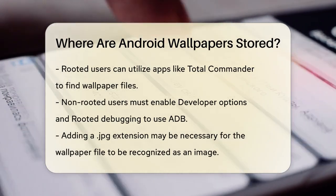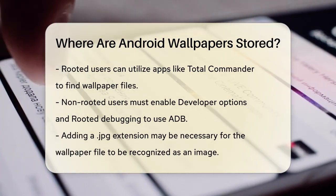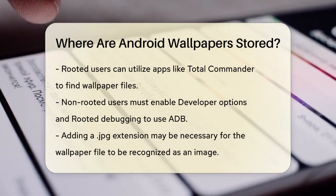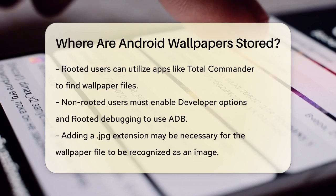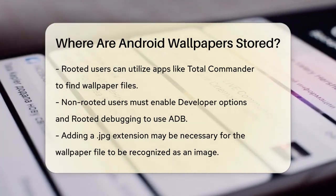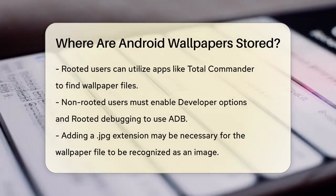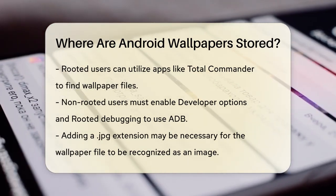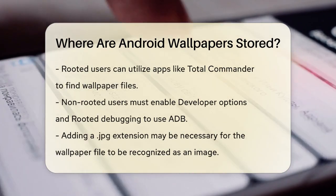If your phone is rooted, you can use an app like Total Commander or a File Explorer with root access to find this file. If not, you'll need to enable developer options, enable rooted debugging, and then use ADB from a computer to access the file. Once you find it, you might need to add a JPG extension to the file to make it recognizable as an image.